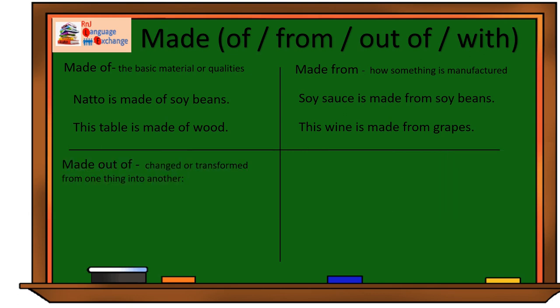Let's take a look at something a bit more complicated. Made out of. We use made out of when we talk about something that has been changed or transformed from one thing to another. Notice that I used the words change and transform a while back when I explained made from.